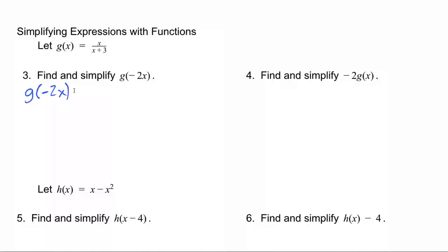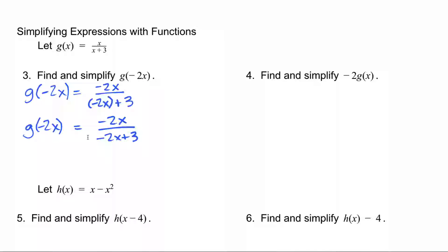G of negative 2x means that anywhere I see x in my original function, I'm going to replace that with negative 2x. So I have negative 2x over negative 2x plus 3. The numerator cannot be simplified, and the denominator is just negative 2x plus 3 — that is in simplified form. It might be tempting to think that these two values might cancel out, but they do not. In upcoming sections we'll talk about why this cannot be simplified further.